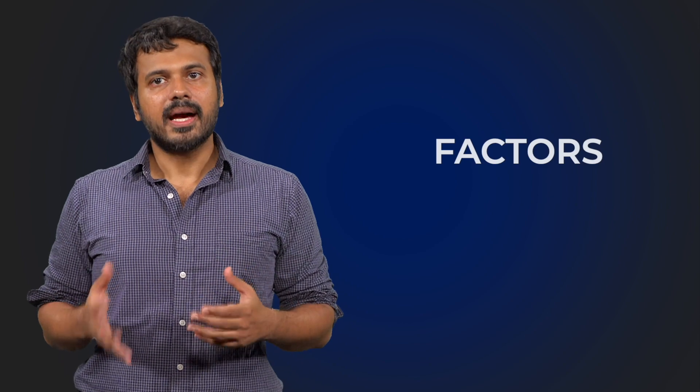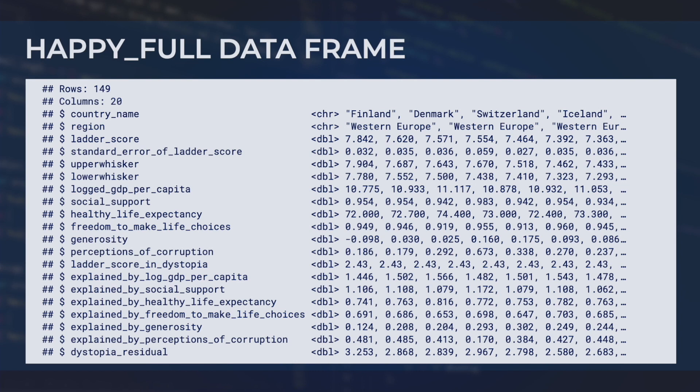Importantly, factors have what are known as levels, which we will go over soon. We will be using the happyFull data frame in this video — this is what it looks like. We will specifically focus on the region variable, which contains information about which larger region a particular country belongs to. We can see here that R has automatically stored this as a character variable.